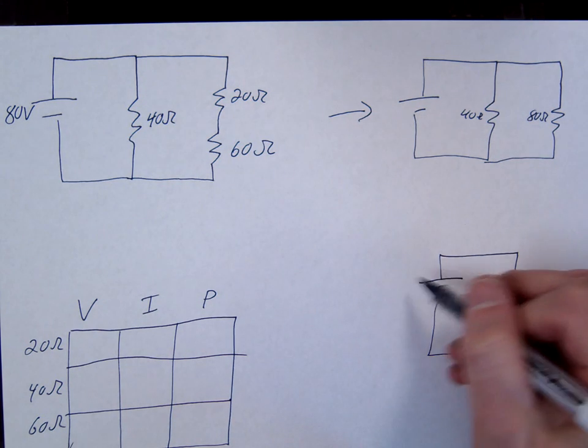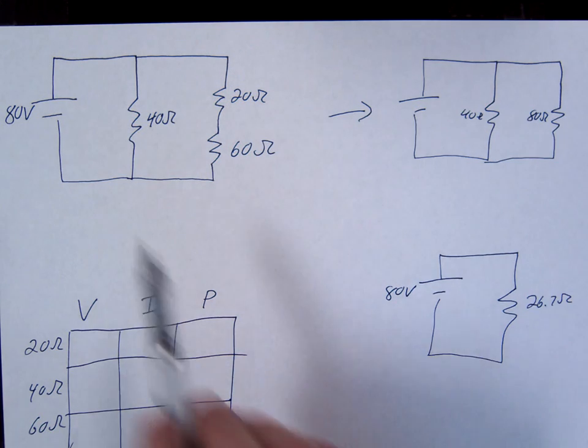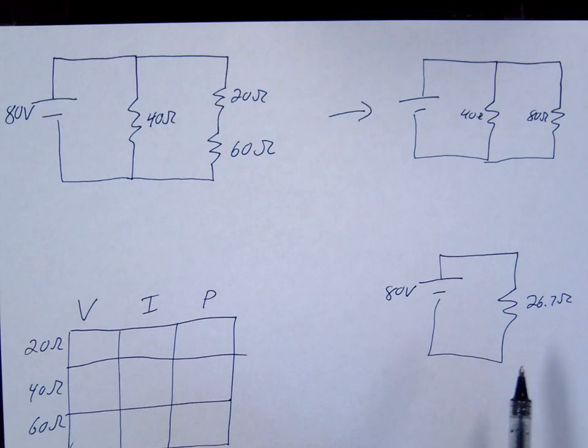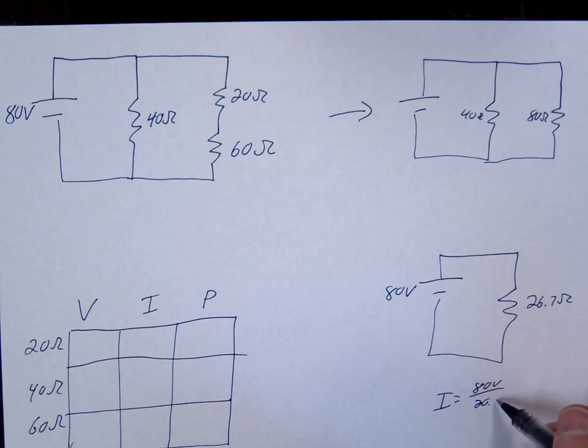And remember this was 80 volts. So that's step one. And then step two is now work our way backwards, solving for missing V's and missing I's. So here we know the V, we know the R, we're missing the I, so we're just going to go I equals V over R, 80 volts over 26.6 ohms. And you get 3 amps.